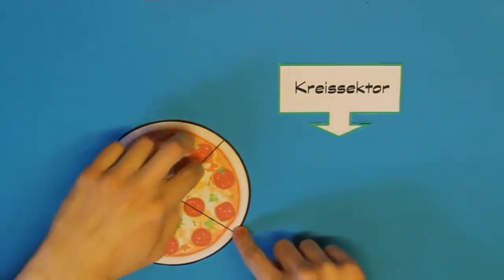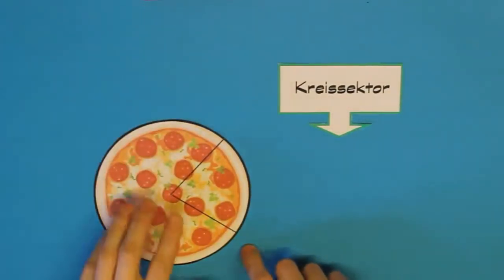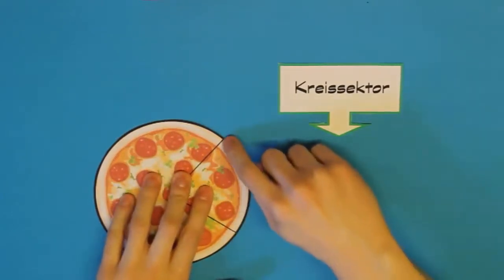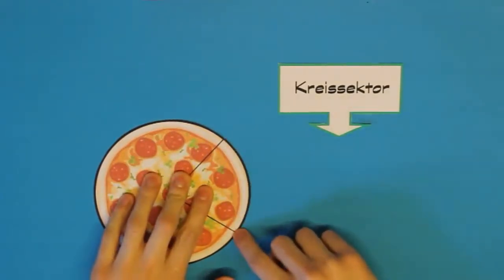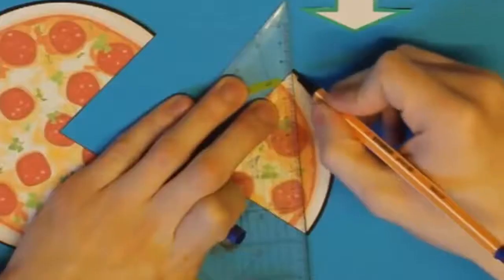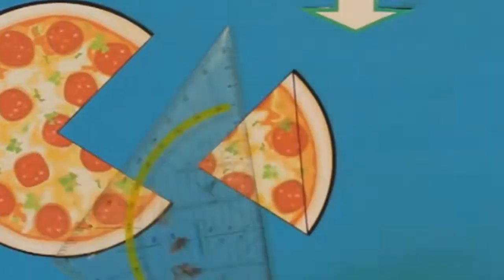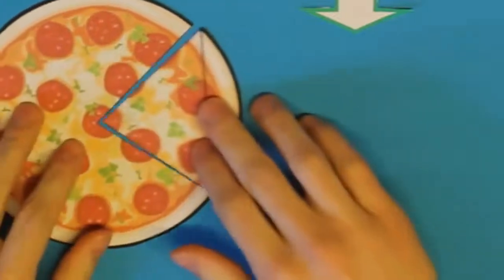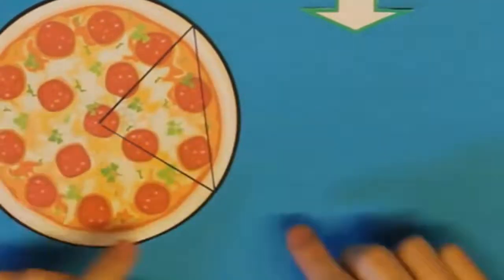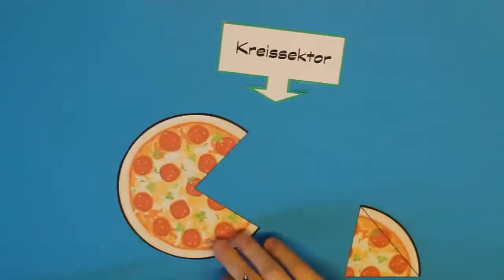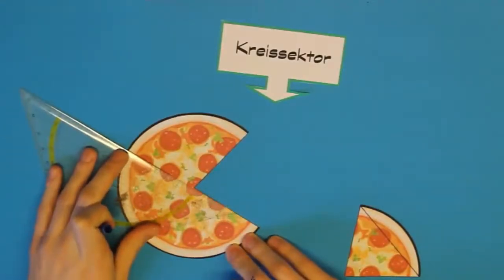Wenn man jetzt ein Lineal nimmt und die zwei äußersten Punkte am Kreisbogen, also diese beide, miteinander verbindet, dann entsteht eine Linie und diese Art von Linie, die kennt ihr bereits. Es ist nämlich eine Kreissehne. Das haben wir bereits gemacht.